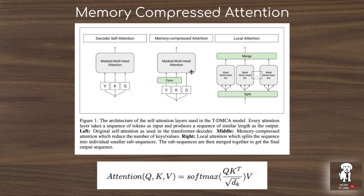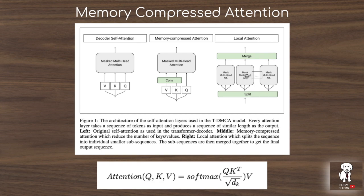They present two techniques for approximating full attention. The first takes the key and value matrices and reduces their embedding length using a strided convolution, reducing the second dimension of the key matrix from full length to a smaller number, and doing the same for the value matrix to align the dimensions for matrix multiplication. The second technique, local attention, splits the input sequence — for example, taking the first 256 tokens into one multi-head attention layer, the next 256 into a separate layer, and so on — then merging them with something like a fully connected layer.